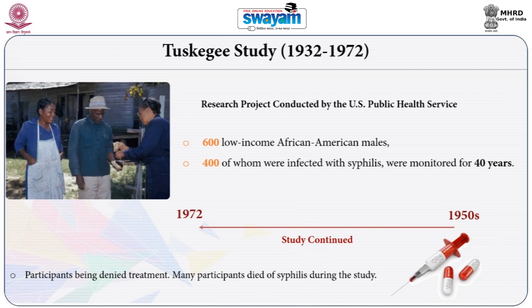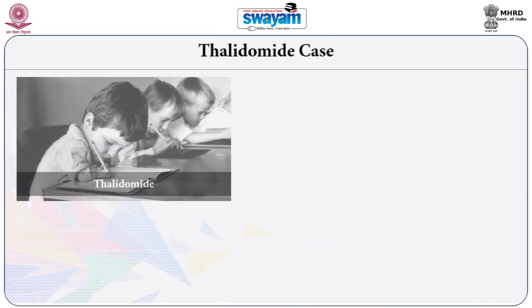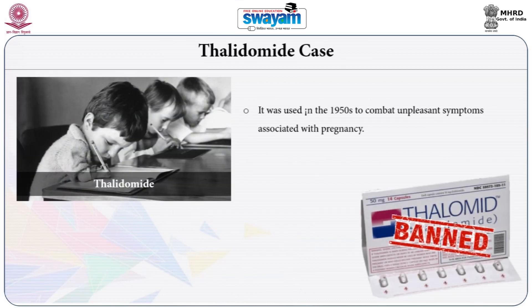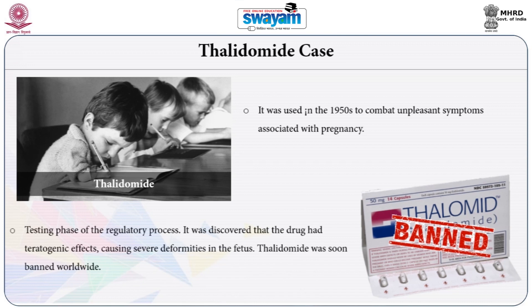Many participants died of syphilis during the study. In the thalidomide case, thalidomide was used in the 1950s to combat unpleasant symptoms associated with pregnancy. At the time it was being used, it was not usually disclosed to patients that the drug was investigational and still in the testing phase of the regulatory process. It was discovered that the drug had teratogenic effects, causing severe deformities in the fetus. Thalidomide was soon banned worldwide. Unfortunately, approximately 12,000 babies were born with severe deformities due to thalidomide.